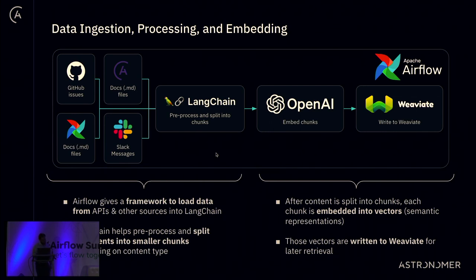After the data is fully pre-processed and split into chunks, we run it through OpenAI for embedding. When embedding is complete, we write it to Weaviate, which is then used for vector retrieval. This is the process of taking all different data sources, embedding them using the same embedding model, and writing them to Weaviate to be retrieved later.